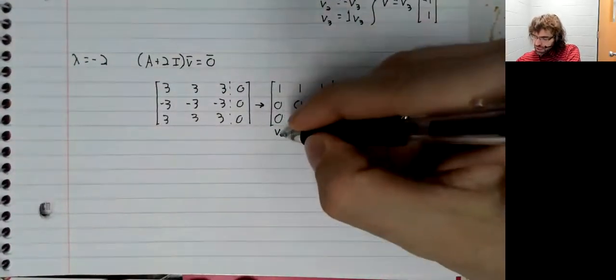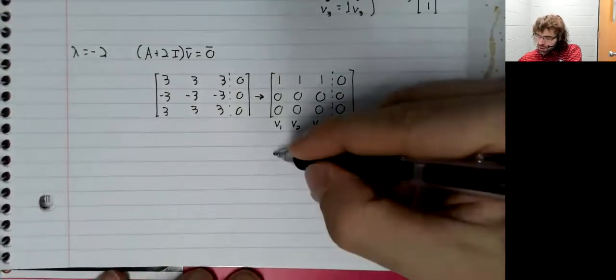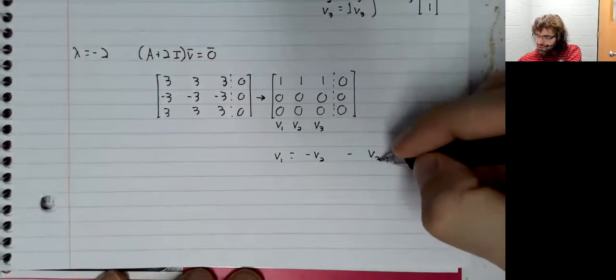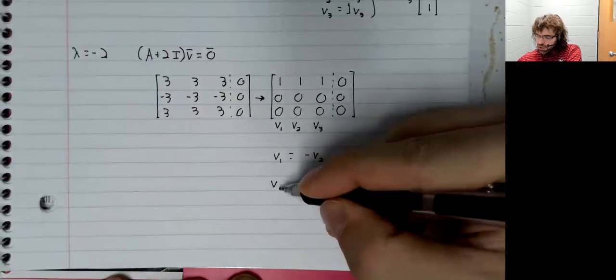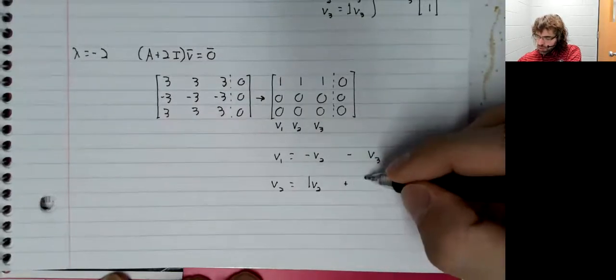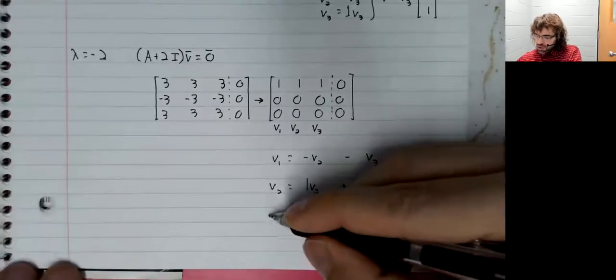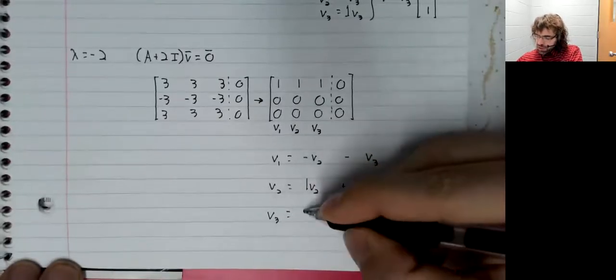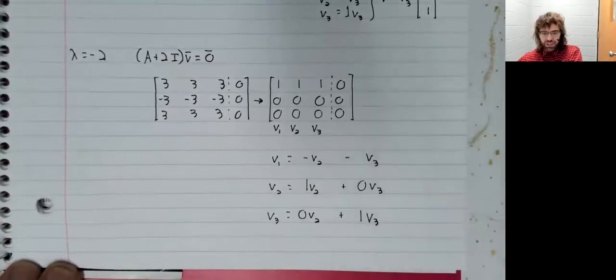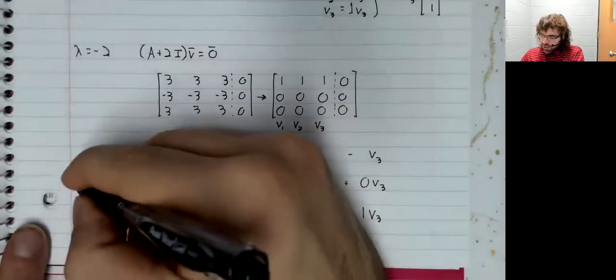So once again, let's turn this into a solution. V1 is negative V2 minus V3. V2 is a free variable. We don't have an equation for it, but we can buffer in this trivial equation. V3 is a free variable, and we can buffer in this trivial equation.